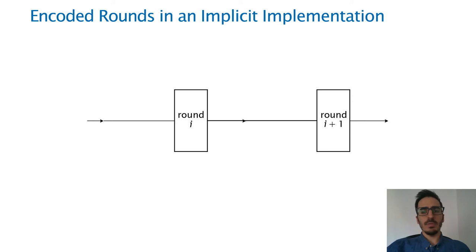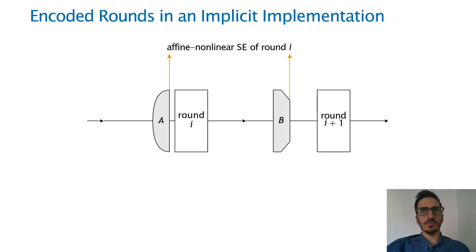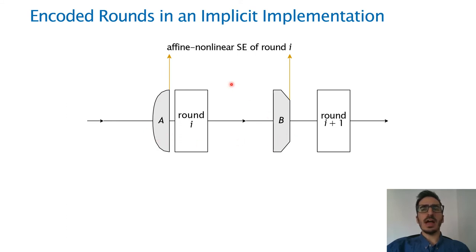Very briefly, to build an encoded round function, we proceed as follows. First, we append an affine nonlinear self-equivalence of the round — that is, a pair of permutations where the first one is affine and the second one is nonlinear — and they cancel each other when used before and after the round function.